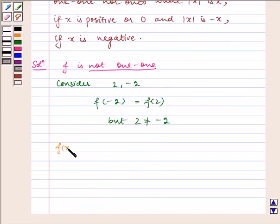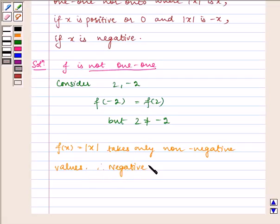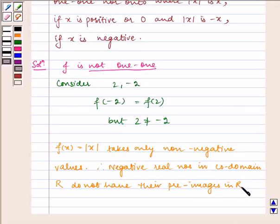Now f(x) = |x| takes only non-negative values. Therefore, negative real numbers in the co-domain do not have their pre-images in R, which is the domain.